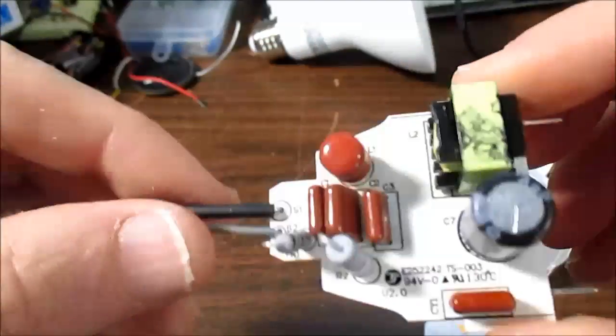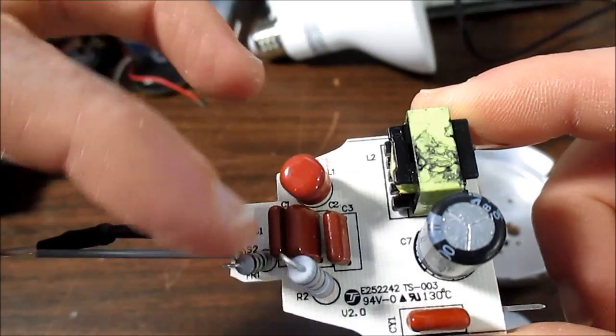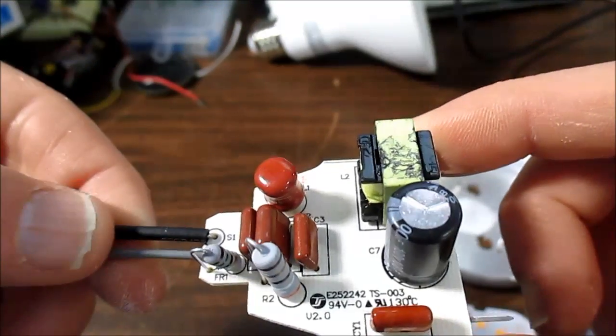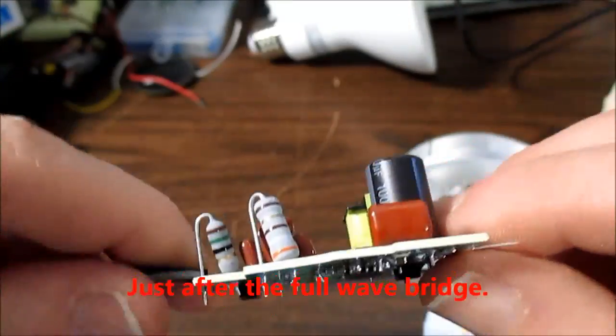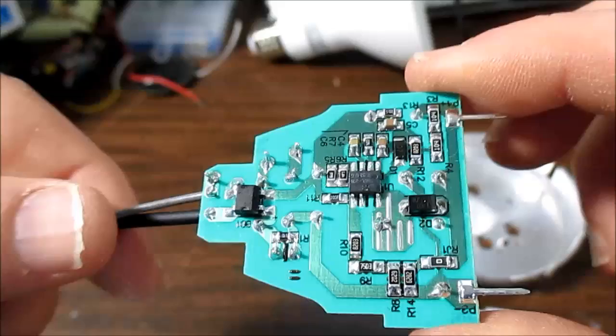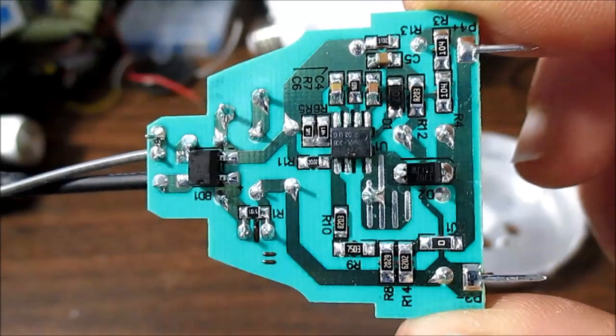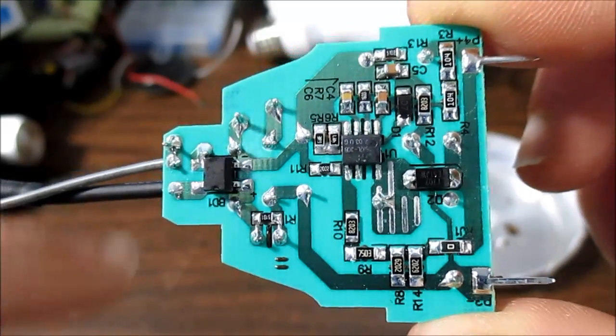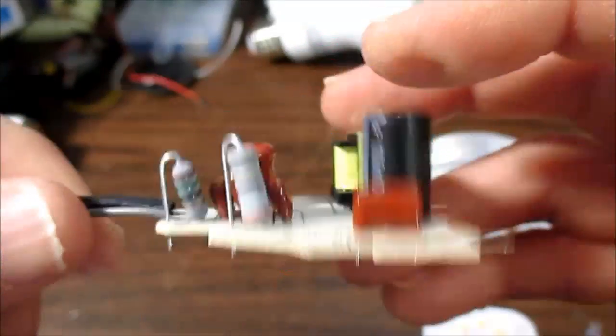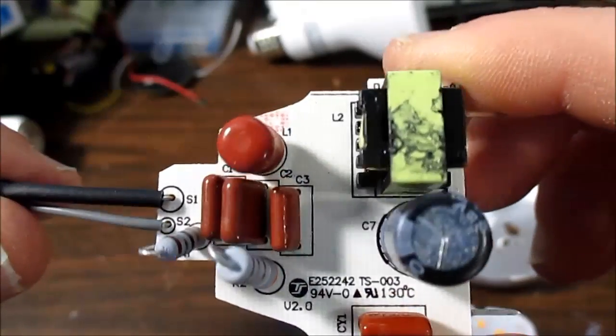And here is the driver board. Typical high power factor type. There's no electrolytic capacitors on the input side. Just the output side will have the electrolytic smoothing capacitor. We have the driver chip and associated components. That's the rectifier bridge. And some noise filtering, to eliminate the switching noise.